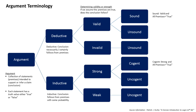In this form of deductive reasoning, the consequent Q obtains as the conclusion from the premises of a conditional statement P → Q and its antecedent P. However, the antecedent P cannot be similarly obtained as a conclusion from the premises of the conditional statement P → Q and the consequent Q. Such an argument commits the logical fallacy of affirming the consequent.